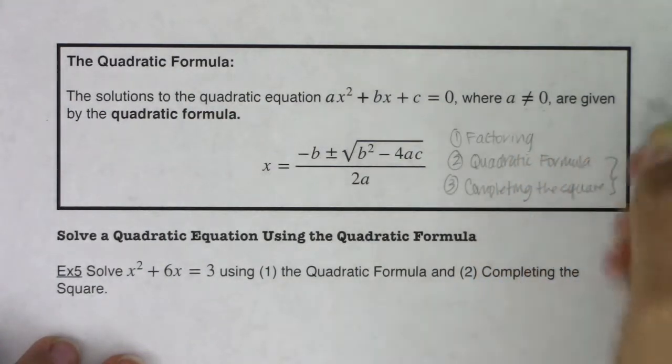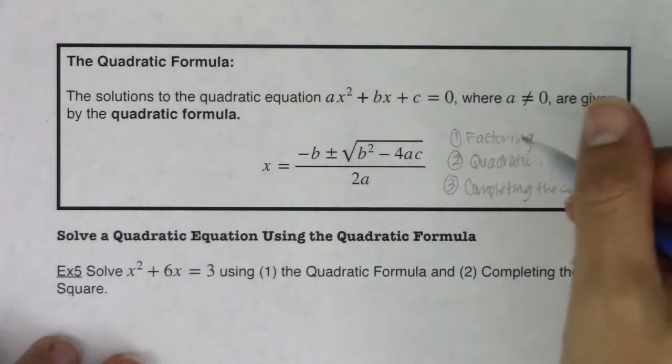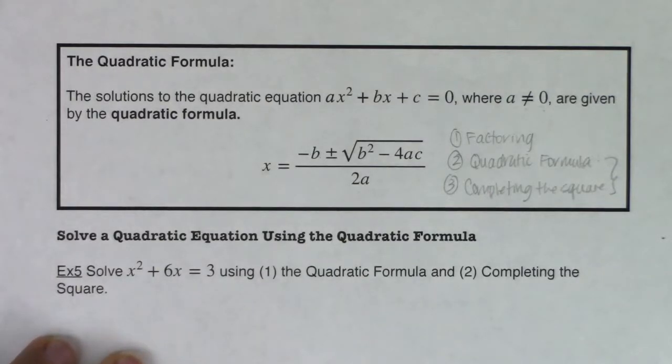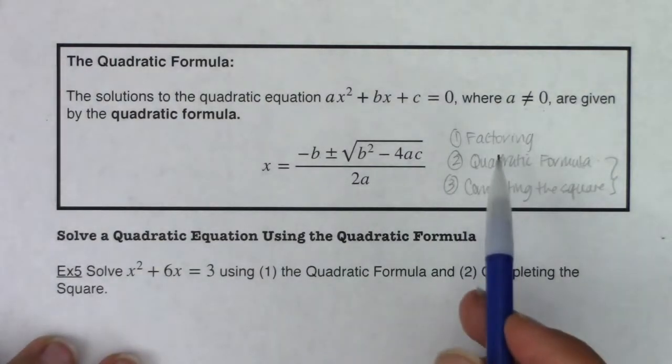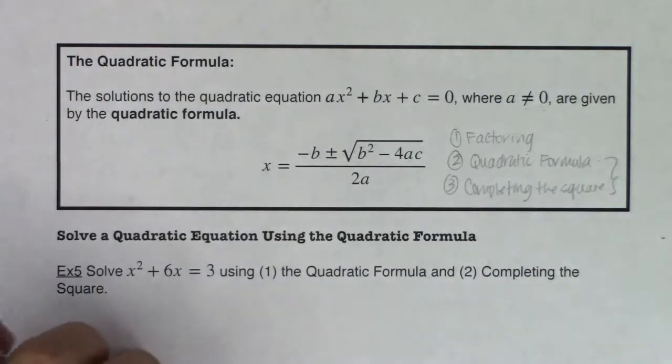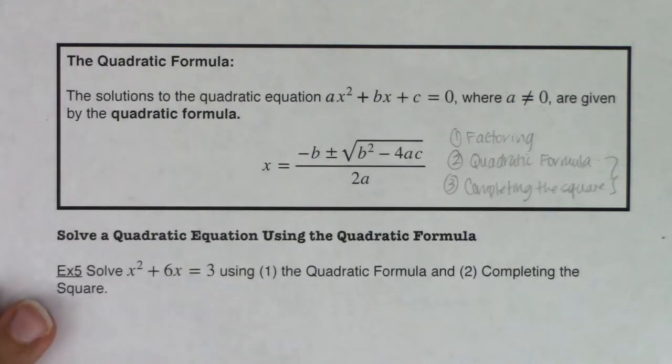All right, these two always work no matter what, that's the benefit in both of them, they're just a little bit messier. This one, if you're solid with factoring you can get to the answer more quickly if your quadratic factors, and that's a big if - a lot of quadratics are prime and so we can't do that.